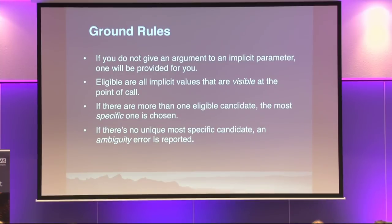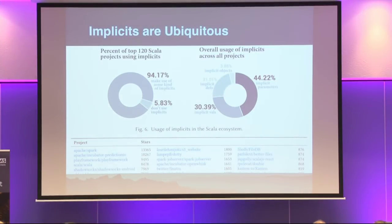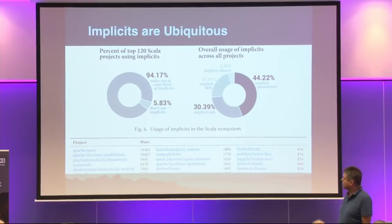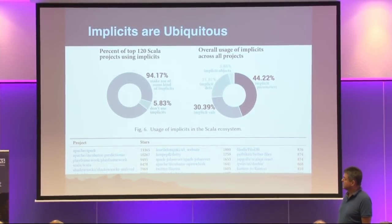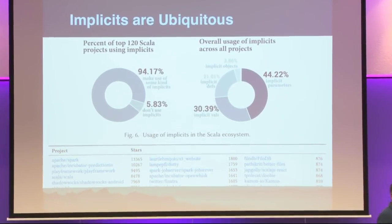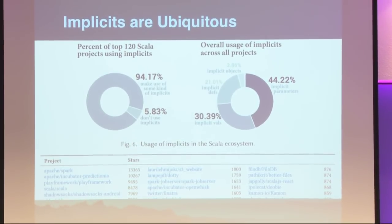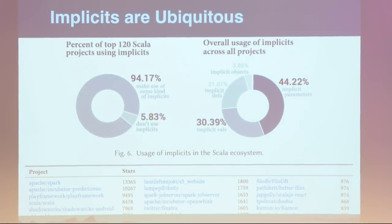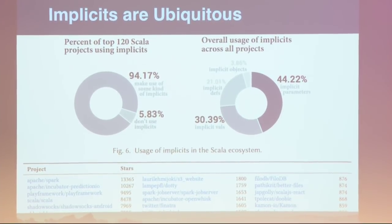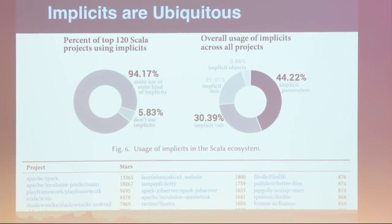So, if there's doubt which is the right implicit, the compiler doesn't try to give you one at random, but it essentially raises an error and says, well, you have to be explicit here. And if you look at what people do with implicits, at least in the Scala ecosystem, they're really ubiquitous. We have something like 95% of all projects in a large list of projects make some use of implicits, only 5% don't use them. And it's pretty uniformly distributed how they use them — essentially all aspects of implicits are used a lot.